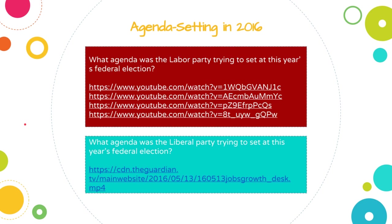Another example, looking at a more recent one, is the Liberal Party and Labor Party agendas set in the most recent federal election. Links to those clips will be included in the comments below. You'll probably find that if you speak to people who voted in this election, depending on which party they voted for, they will be able to articulate to you the exact agenda that the Labor and Liberal Party set for the election.